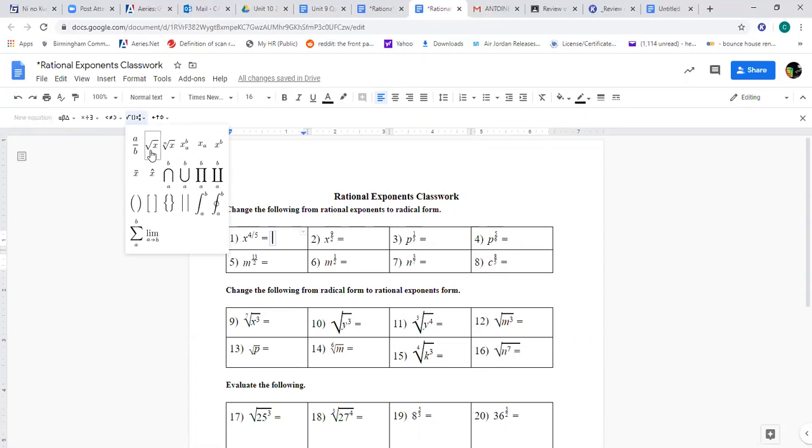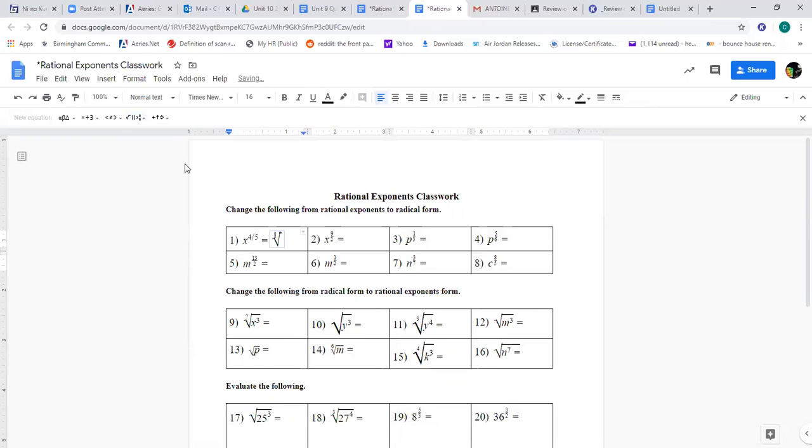Which you're going to use when the denominator is 2. However, if you need to do another type of root, like in this number 1, since the denominator is 5, the root is going to be 5. So I'm going to click on that one. And what happens is you get to write in two places. See where the cursor is blinking? Now I'm going to write a 5 there.